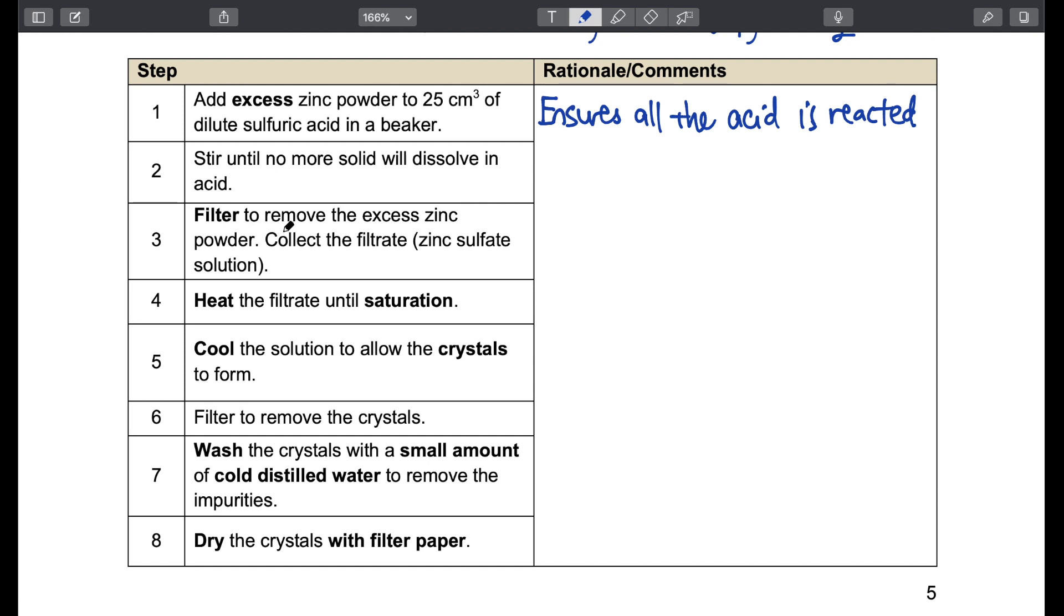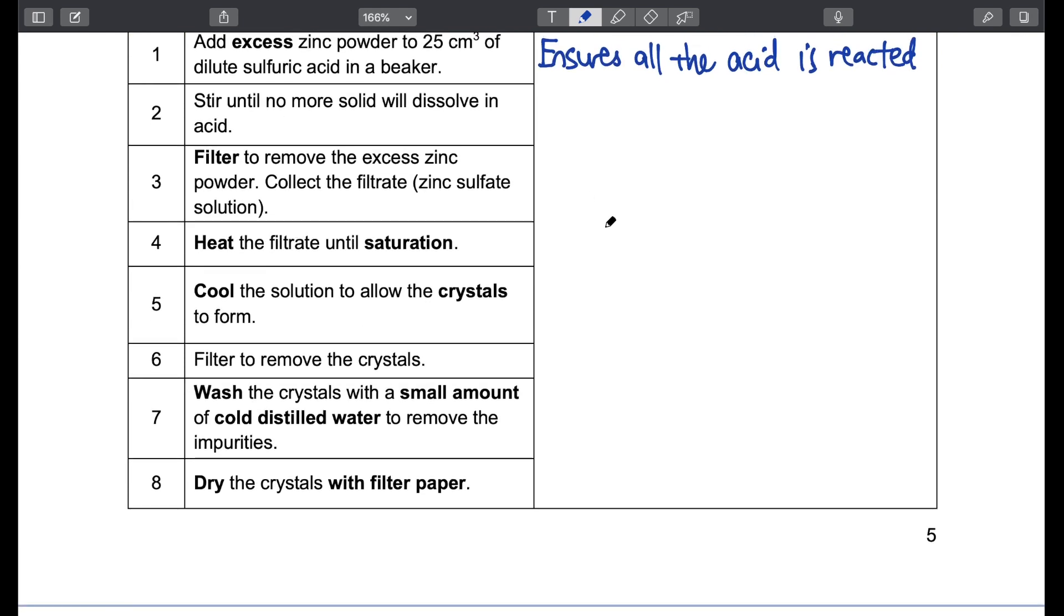We'll filter to remove the excess solid, in this case zinc powder, and collect the filtrate which is the salt solution that we want. Following which are the steps for crystallization and this will be nothing new to you given that we have learned this in the chapter of separation techniques. We will heat the solution to saturation, cool to allow crystals to form. When cooling, crystals form because the solubility of a salt decreases when temperature decreases.